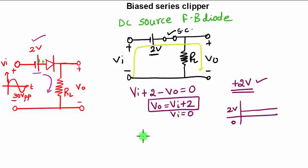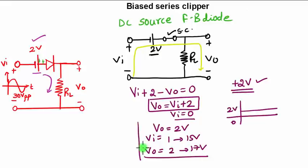Now your diode is forward biasing as VI is 0. You are getting output voltage as 2 volts. Then your VI is increasing from 1 to 15 volts. So what will be the range for VO? It will start from 2 and go to 17 volts in the positive half cycle. This is how we are finding the waveform for the positive half cycle.